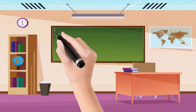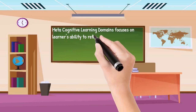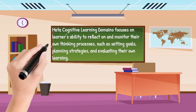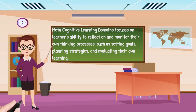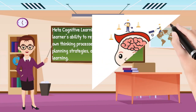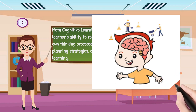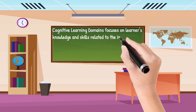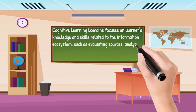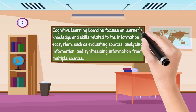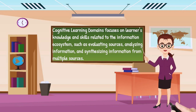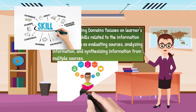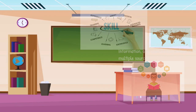interest, and motivation. Metacognitive learning domains focuses on learners' ability to reflect on and monitor their own thinking processes, such as setting goals, planning strategies, and evaluating their own learning. Cognitive learning domains focuses on learners' knowledge and skills related to the information ecosystem, such as evaluating sources, analyzing information, and synthesizing information from multiple sources.